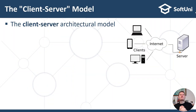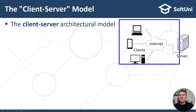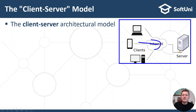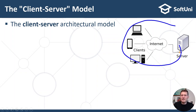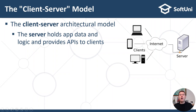The client-server architectural model is widely used in modern apps. Websites, games, information systems, business software and many others are just a few examples of client-server systems. If the app is connected to the internet and stores data at some server, it is built on the client-server architecture. In the client-server architectural model, the server holds the app data and the business logic, and it provides an API to the clients to access the server data.